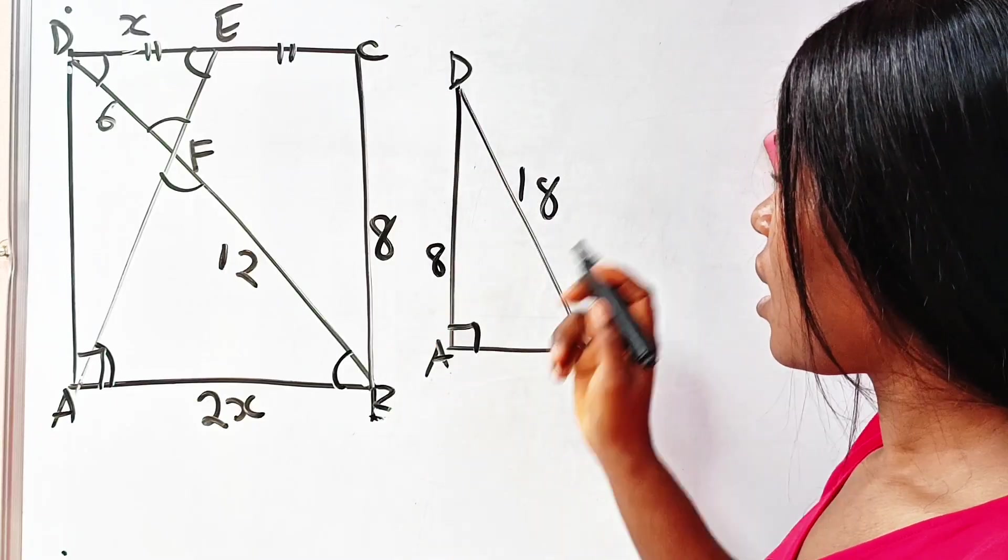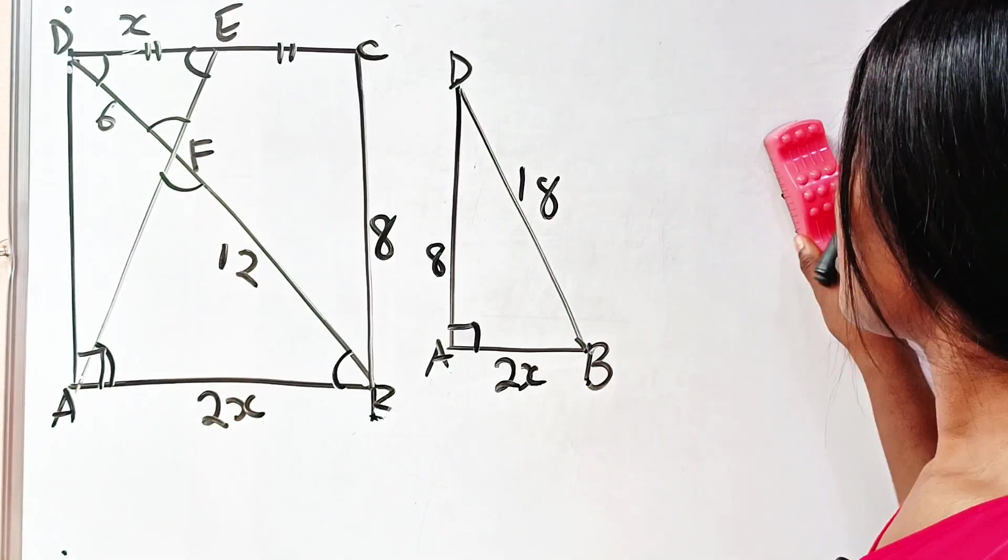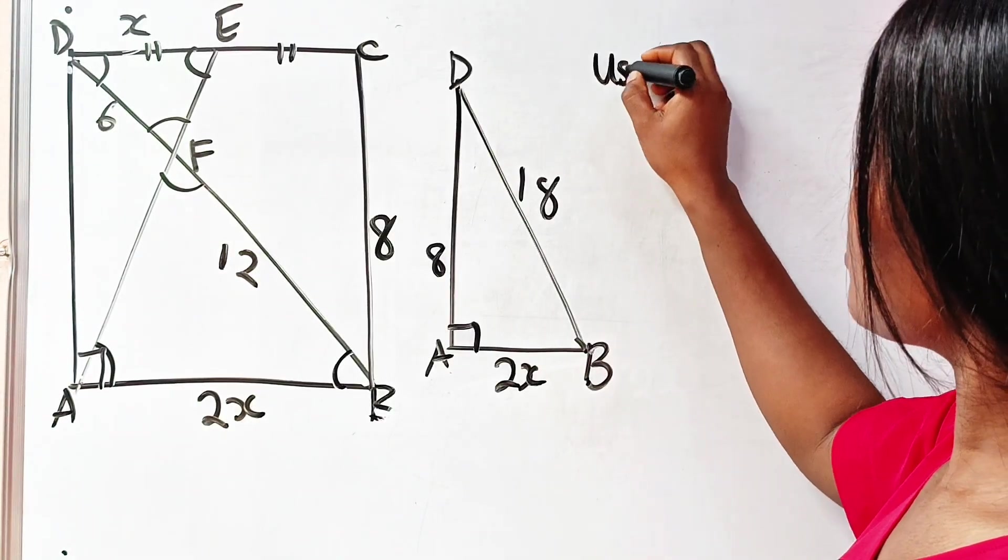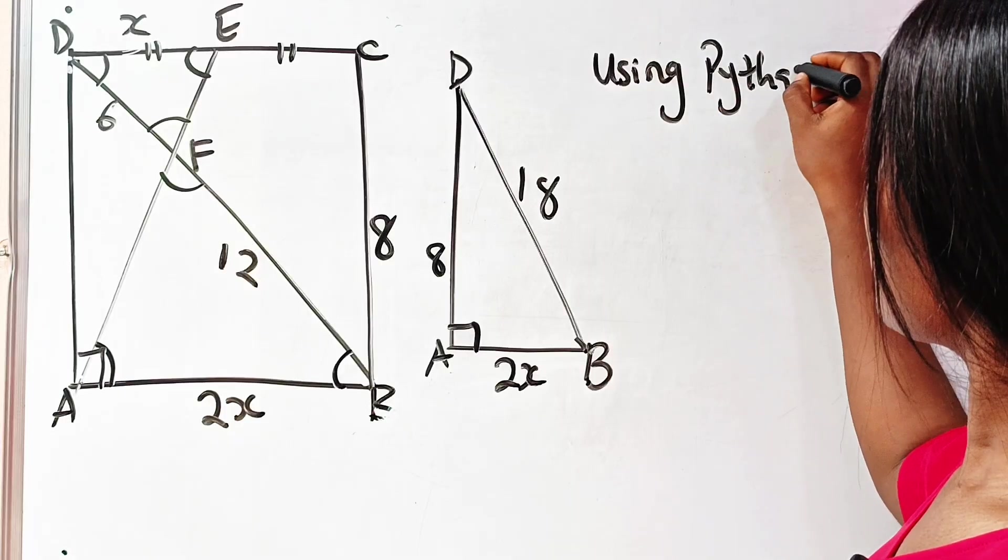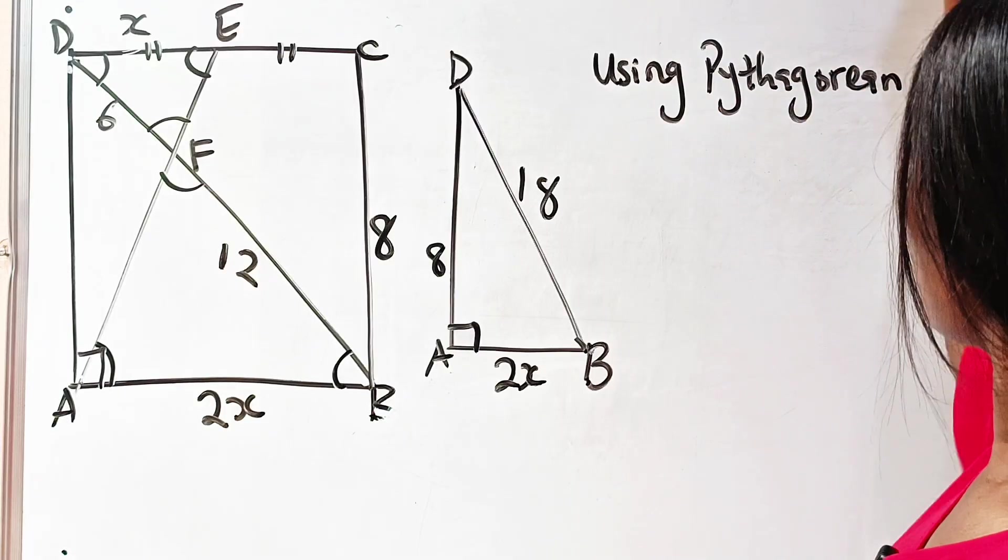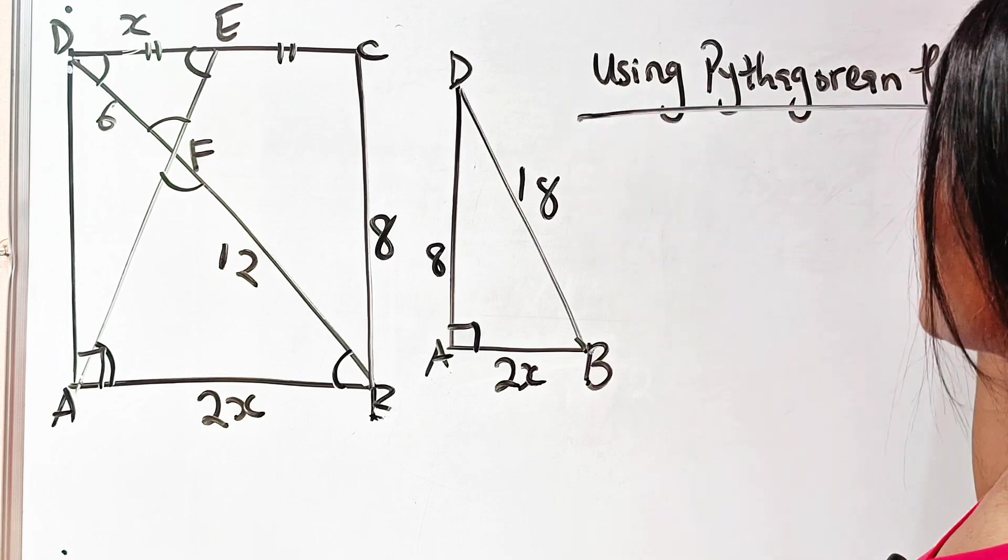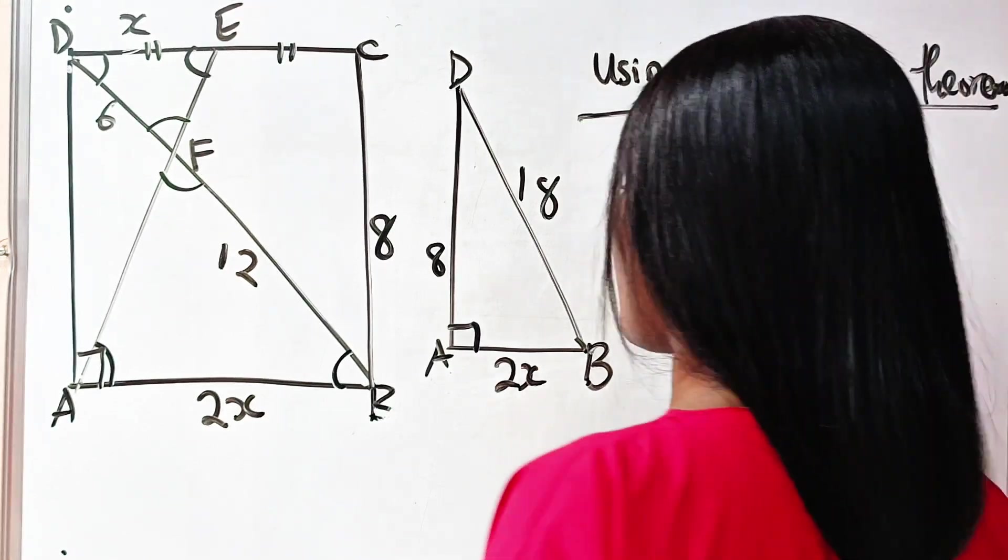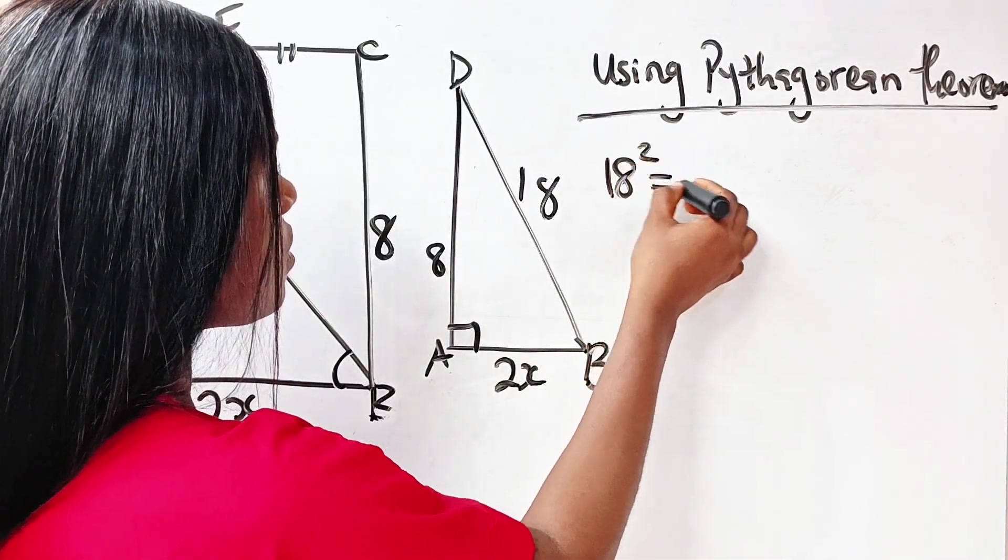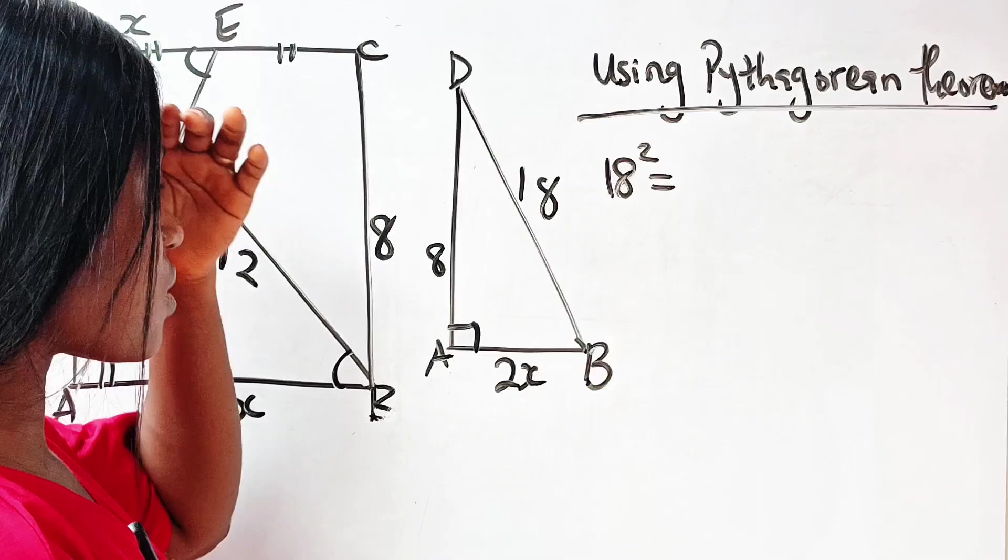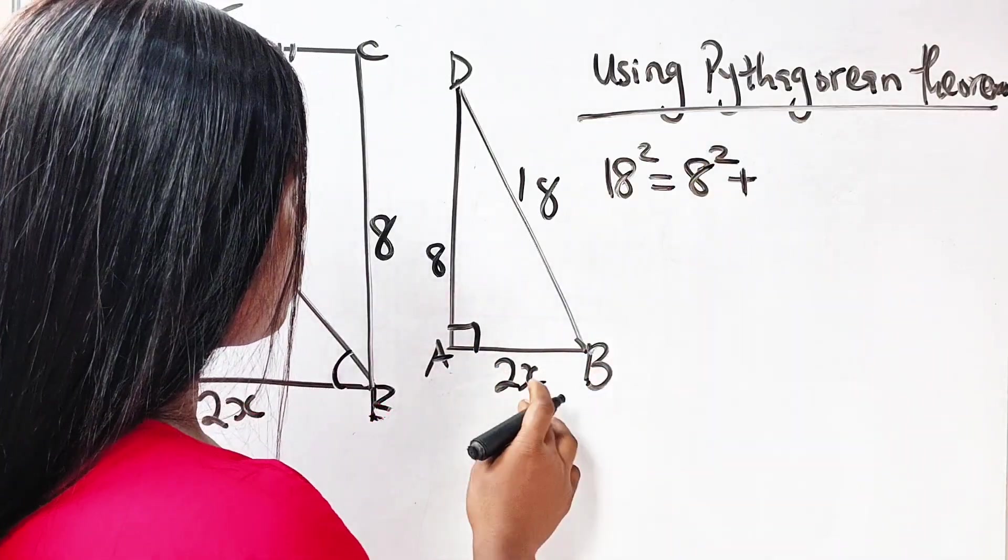Then DB is 6 plus 12, which is 18. AD is the same thing as BC, which is 8, and AB is 2x. Using Pythagorean theorem, we can say the hypotenuse squared—that is, 18 squared—is equal to 8 squared plus 2x squared.